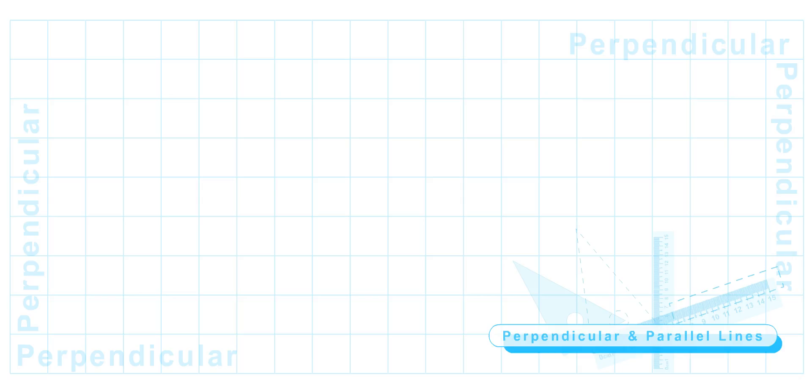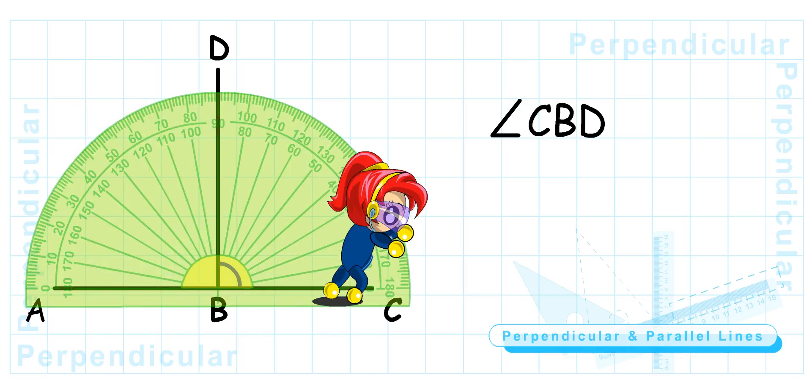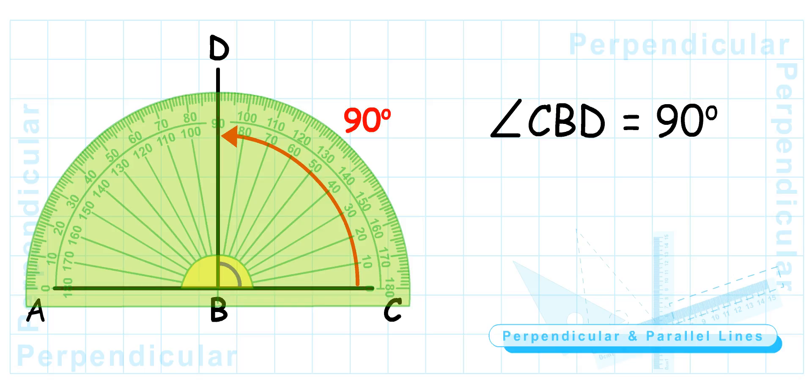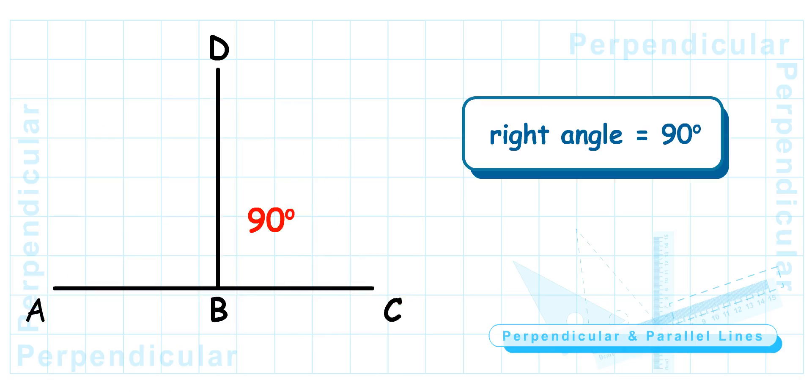I am going to draw two straight lines and name them AC and BD. Now, can you use a protractor to measure angle CBD for me? It is 90 degrees. Correct. If an angle measures 90 degrees, we call it a right angle. When two straight lines like AC and BD form a right angle, we say that they are perpendicular lines and we put a mark like this to show that they are perpendicular. In a symbol, we write it as AC perpendicular to BD.